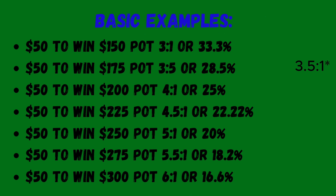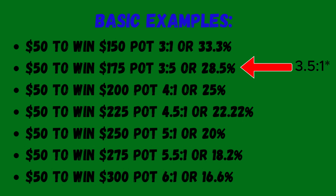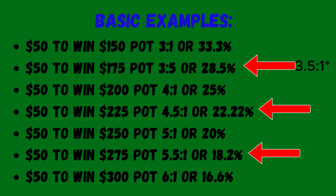Here are some different increments that can possibly help you guys remember the next time you're sweating bullets in a massive pot because you have no idea whether to call or fold. These are the basic increments for having to call $50 to win different pot sizes. For example, $50 to win $150 pot — that's 33%. $50 to win $175 — that's 28.5%. $50 to win $200 — that's 4-to-1, which is 25%, and so on. The even numbers are easy to calculate, but the odds between them can be a little tricky, so I just like to think of them as being in-betweens.